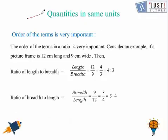Now we are going to learn about the order of terms, which is also very important. In this question the length is 12 centimeters and the width is 9 centimeters. The first question asks for the ratio of length to breadth — length comes first, so length is on top and breadth is on the bottom. That gives us 12 over 9, which simplifies to 4 over 3, so the ratio is 4 to 3.